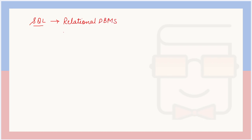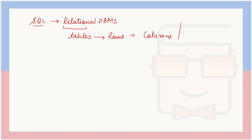Relational databases consist of tables. The term 'relation' basically refers to tables, and each table consists of rows and columns. Columns are also known as attributes. Columns are the vertical lines or vertical collection of values present in the table — this is the first column, this is the second column, this is the third column, and so on.